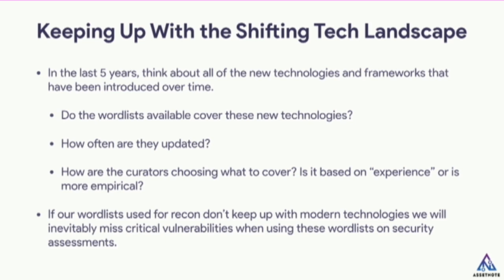One of the key areas is keeping up with the shifting tech landscape. If your word lists are out of date with the technologies people are using to develop applications, you're going to miss stuff. Just think in the last five years — all the new technologies and frameworks that have been introduced, there's got to be at least a bajillion JavaScript frameworks. Do the word lists available cover these technologies? How often are they updated? Are the curators choosing what to include based on experience or something more empirical, or just gut feel? If our word lists don't keep up with modern technologies, we'll inevitably miss significant vulnerabilities when using word lists for security assessments or bug hunting.